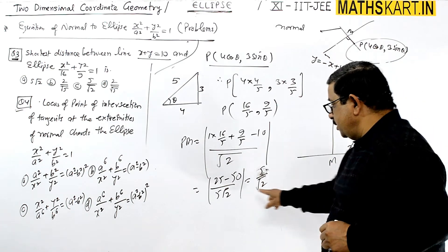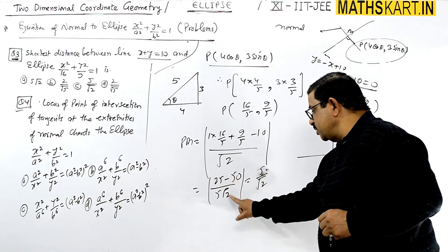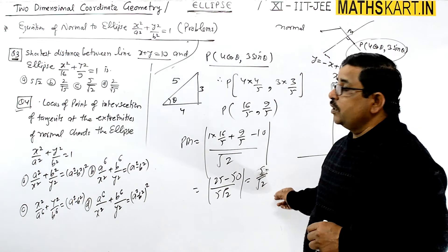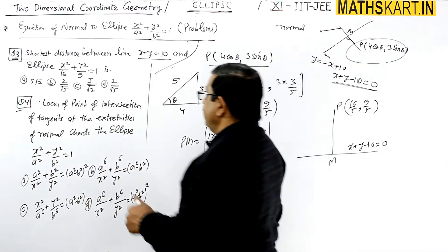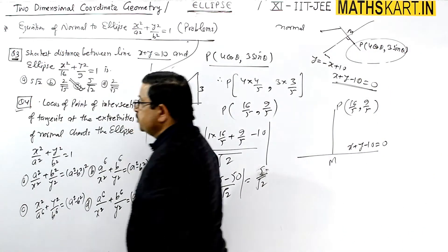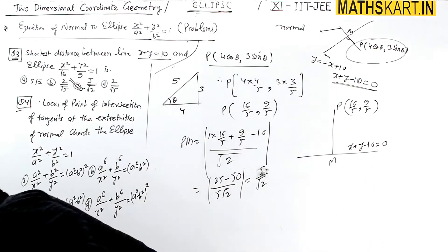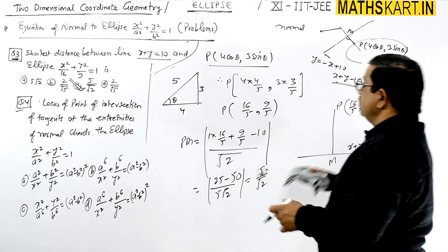The answer is 5/√2, so option C is correct.